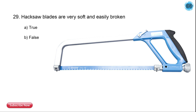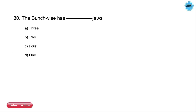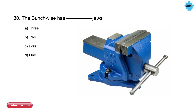The next question is: hacksaw blades are very soft and easily broken — is this statement correct or incorrect? The answer is false, because hacksaw blades are not very soft or easily broken; they are made of a hard material.